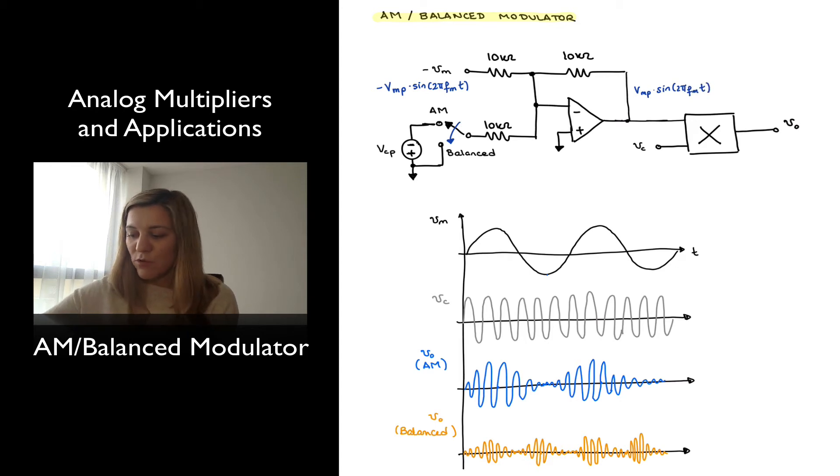In the case of AM modulation, I will get that plus VCP. And then on the other side, I get VC, which is equal to VCP sine of 2 pi fc carrier frequency times t. And those get multiplied.